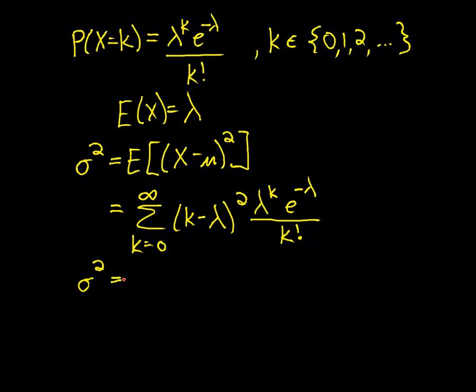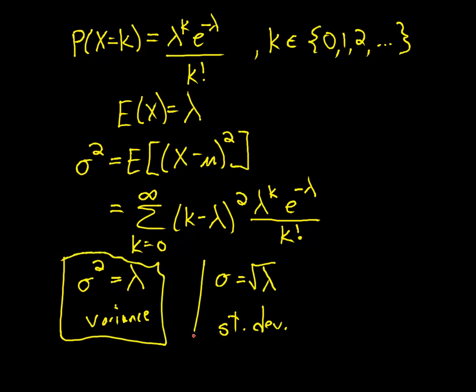So for a Poisson random variable, the variance is the same as the mean, right, lambda, which is the parameter. And then the standard deviation is just the square root of lambda. Okay, so that is the variance and standard deviation for a Poisson random variable.